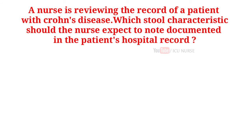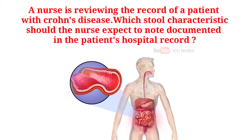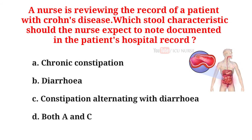A nurse is reviewing the record of a patient with Crohn's disease. Which stool characteristic should the nurse expect to note documented in the patient's hospital record? A. Chronic constipation. B. Diarrhea. C. Constipation alternating with diarrhea. D. Both A and C. And the correct answer is B. Diarrhea.